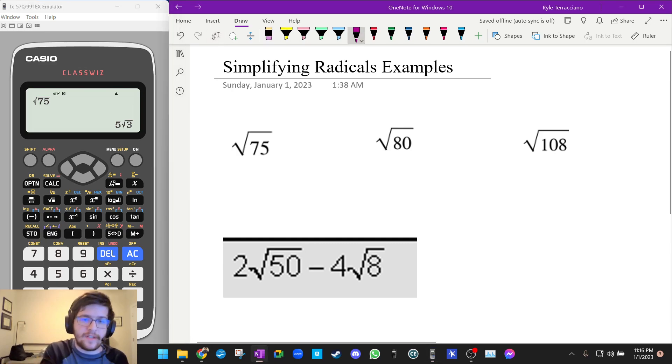And it tells me that square root 75 is 5 square root 3. At this point, why don't you pause the video and see if you can do the rest of them. Let's keep going.